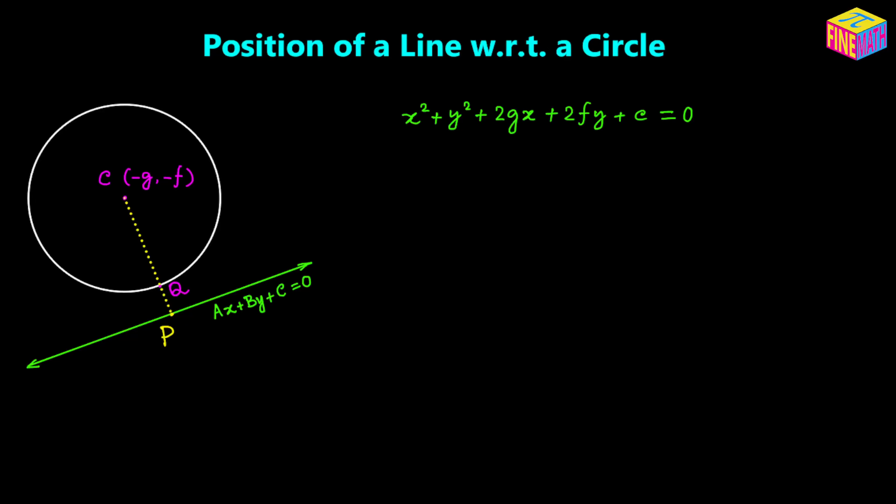As you can see in the diagram, Cq will be equal to the radius of the circle. And if Cp is greater than the radius — meaning Cp is greater than Cq — then obviously the straight line is outside of the circle. If Cp is equal to the radius, then obviously the straight line will be a tangent line. If Cp is less than the radius, then it will be a secant line. And if Cp is equal to 0, that means the distance is 0, meaning the straight line goes through the center, so it becomes a normal line.